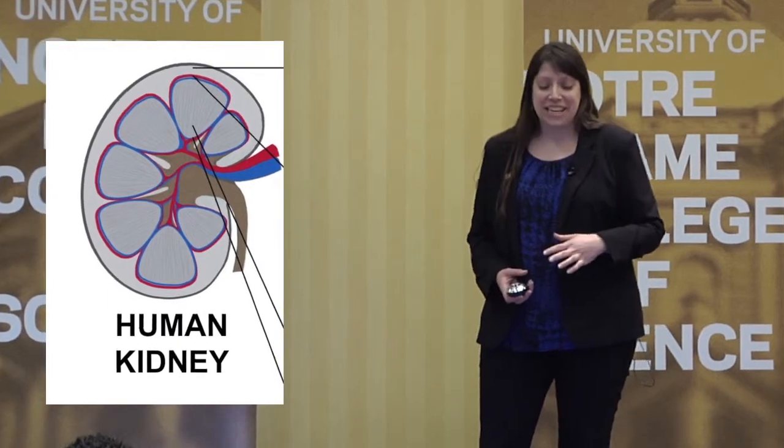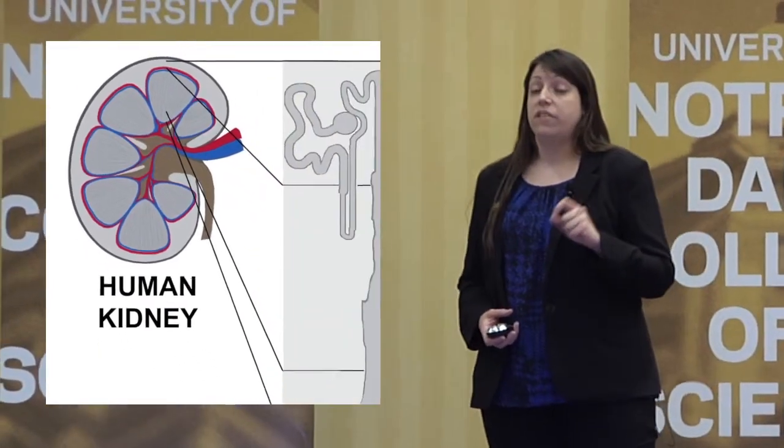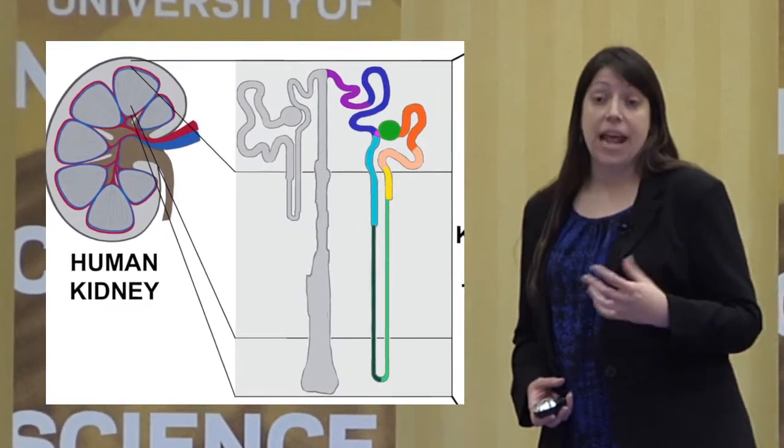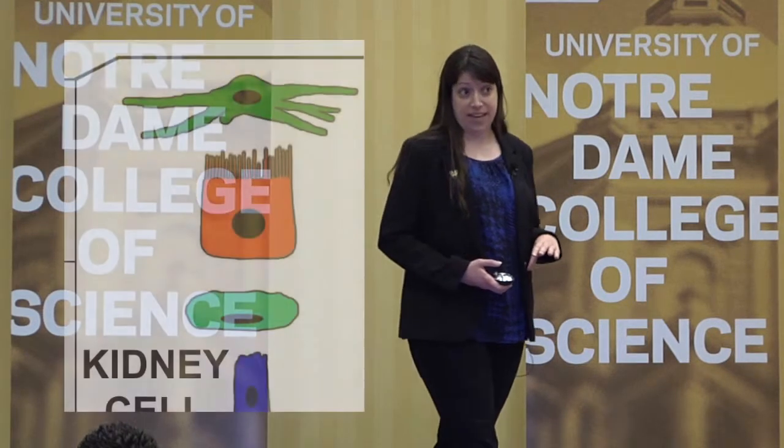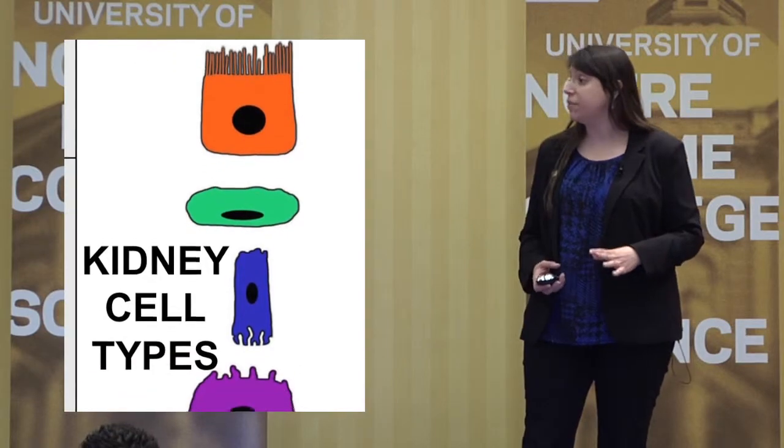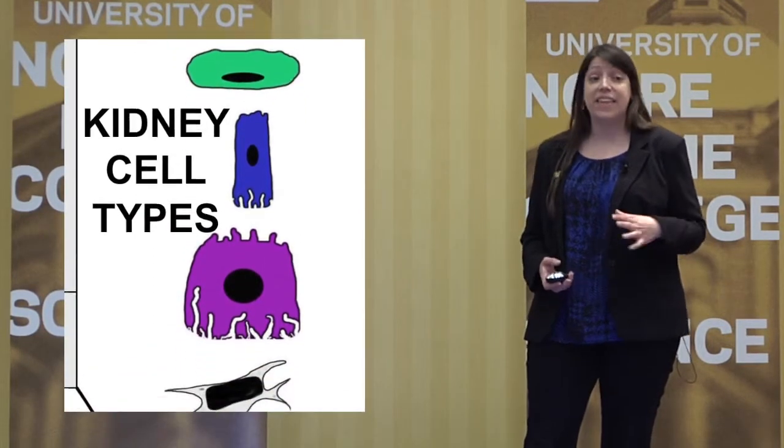The organ I'm particularly interested in — the one my lab studies — is the kidney. This is an organ made up of anywhere between 20 and 30 different cell types. You're seeing a human kidney here, a simple diagram. It's made out of a series of tubes that clean the blood and make a urine product. I'm showing blow-ups of a couple of the different cell types in cartoon form; they're incredibly diverse even within one organ, and they each do different jobs.